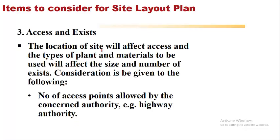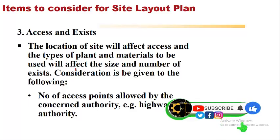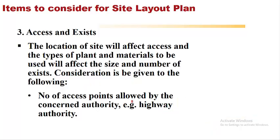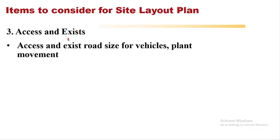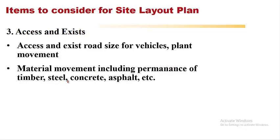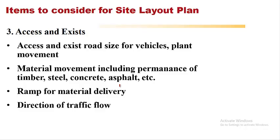Access and exits: the location of the site will affect access, and the types of plant and materials to be used will affect the size and number of exits. Considerations include: number of access points allowed by the concerned authority — you should contact the highway authority for which routes should be used. Access and exit road size should be adequate for vehicle and plant movement. Material movement includes permanence of timber, steel, concrete, asphalt, etc. Ramps for material delivery and direction of traffic flow are also important, as well as methods of protecting existing footpaths.